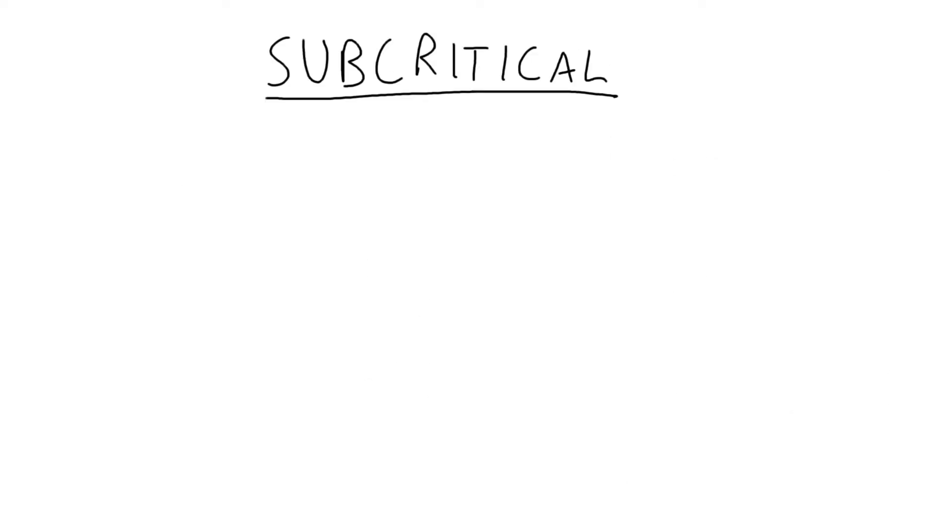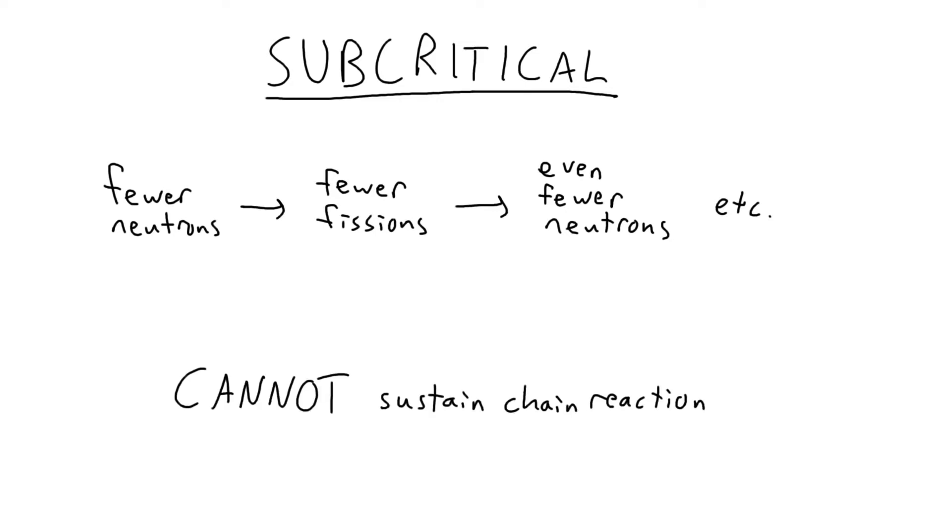The first scenario is called subcritical. This means we're getting fewer and fewer fissions over time, thus fewer and fewer prompt neutrons, which means even fewer and fewer fissions. Our fission rate is decreasing over time, which means our system cannot sustain a chain reaction, and we cannot have a nuclear reactor or a nuclear bomb.